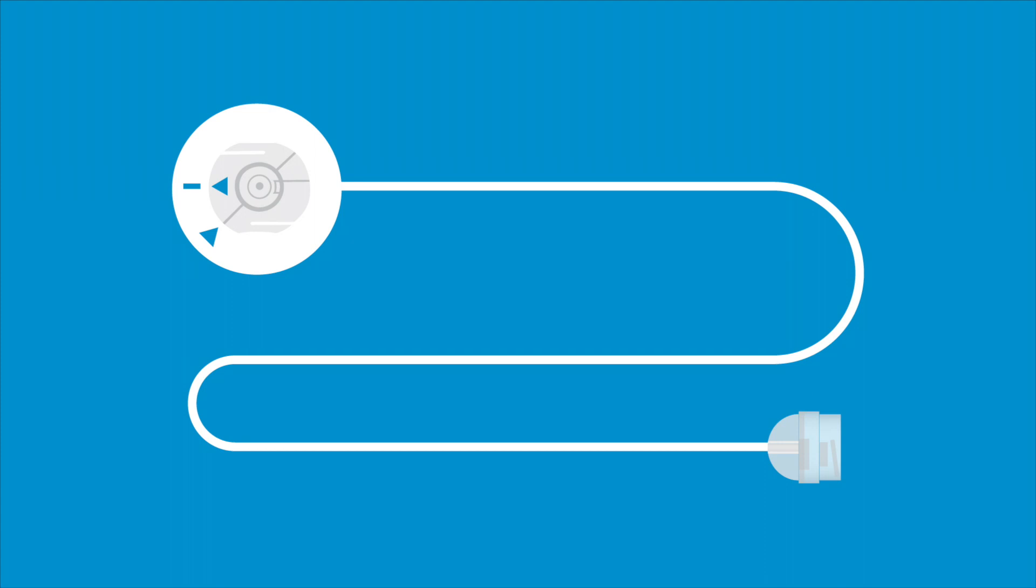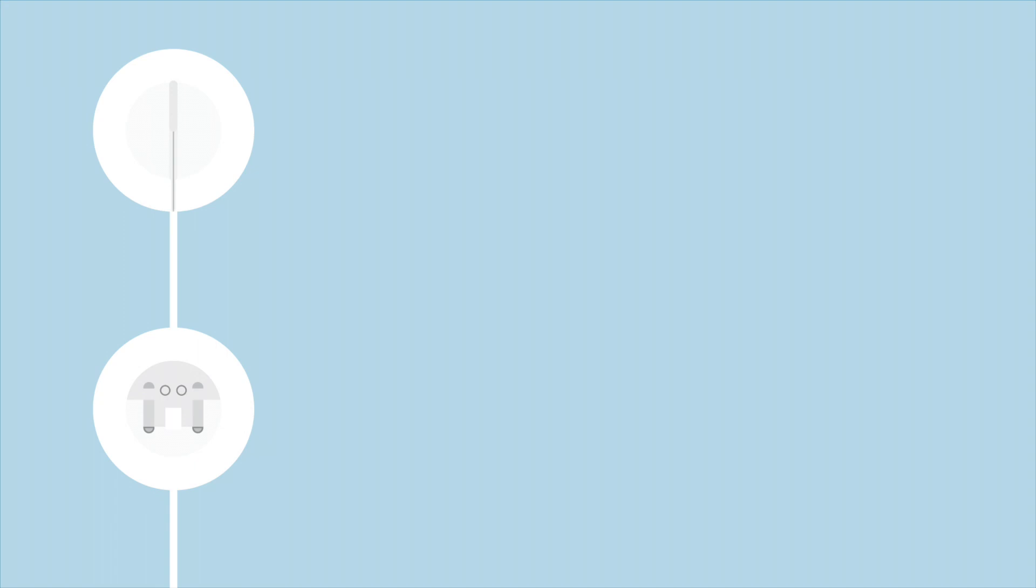The infusion set consists of the tubing that carries insulin from the pump to your body. One end of the infusion set connects to the reservoir, the other end connects to the body. There are several different types of infusion sets, but they all work the same.